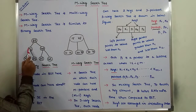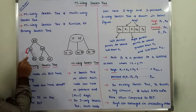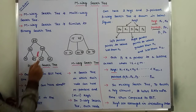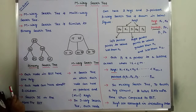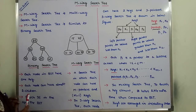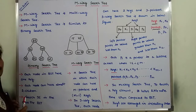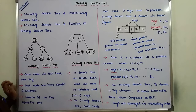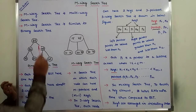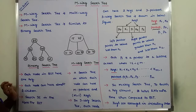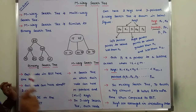At most two children means a node can have zero children, one child, or two children. Consider this node — it contains two children, that is 20 and 40. This node contains two children: 16 and 22. This node contains two children: 35 and 45. The remaining nodes contain zero children. In the Binary Search Tree, a node may contain at most 2 children: either 0, 1, or 2 children.